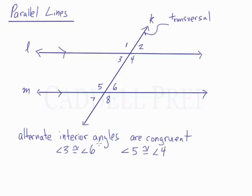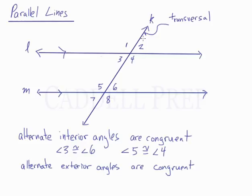Alternate exterior angles are also congruent. Exterior angles are 1, 2, 7, and 8 — on the outside of the parallel lines. Alternate means opposite sides of the transversal, so alternate exterior pairs are 1 and 8, giving us angle 1 congruent to angle 8, and 2 and 7, which are also congruent.